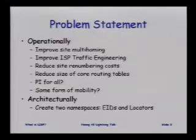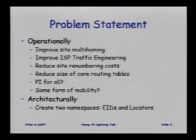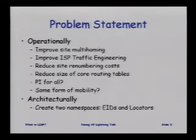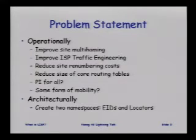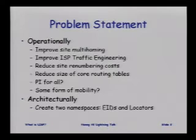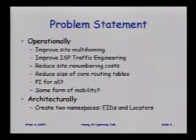Problem statement. Operationally, we want to improve site multi-homing. You can control how egress packets go, but you can't control how ingress packets go because people upstream from you use BGP best path selection to decide how packets come in to you. So it would be nice if sites could decide which way packets come in. Same thing with ISP traffic engineering — packets go the way they want egressing their domain, but ISPs want ingress traffic engineering as well.